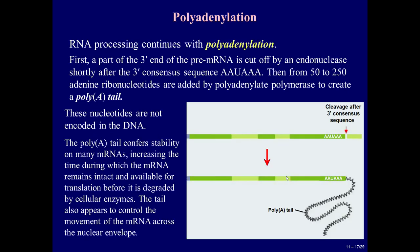Polyadenylation: RNA processing continues with polyadenylation. First, a part of the 3' end of the pre-mRNA is cut off by an endonuclease shortly after the 3' consensus sequence. Then from 50 to 250 adenine ribonucleotides are added by polyadenylate polymerase to create a poly-A tail. These nucleotides are not encoded in the DNA. The poly-A tail confers stability on many mRNAs, increasing the time during which the mRNA remains intact and available for translation. The tail also appears to control the movement of the mRNA across the nuclear envelope.